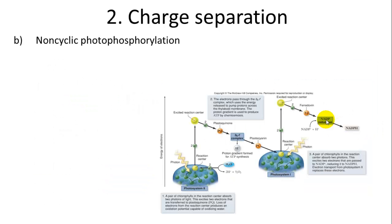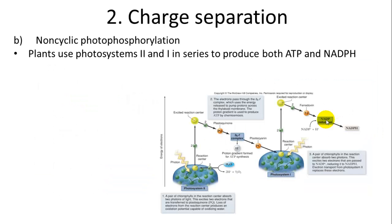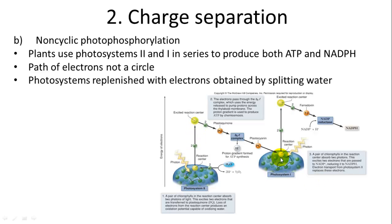Non-cyclic photophosphorylation uses two photosystems — two areas for capturing sunlight and exciting electrons. Photosystem II comes first, then Photosystem I — they're numbered somewhat backwards.